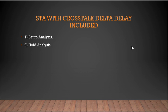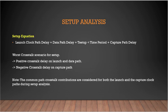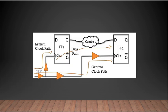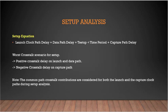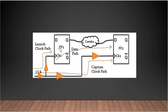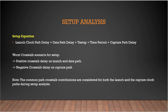Now let's see how STA is done with crosstalk delta delay included — specifically how setup and hold analysis is done. For setup, the equation is: launch clock path delay plus data path delay plus setup time of the capture flop should be less than or equal to time period plus the capture clock path delay. So launch path plus data path plus the setup time should be less than the time period plus the capture clock path.